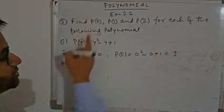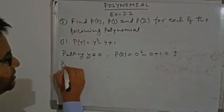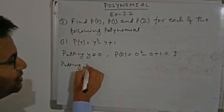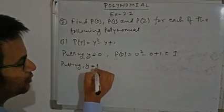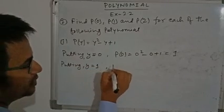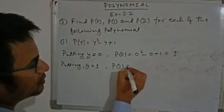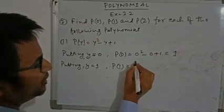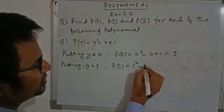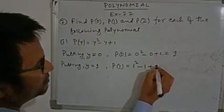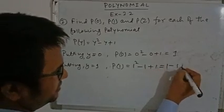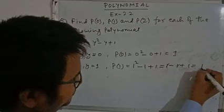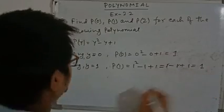Now putting Y equals 1 for P(1). So P(1) equals — replacing Y by 1 — 1 squared minus 1 plus 1. That gives 1 minus 1 plus 1, which equals 1.